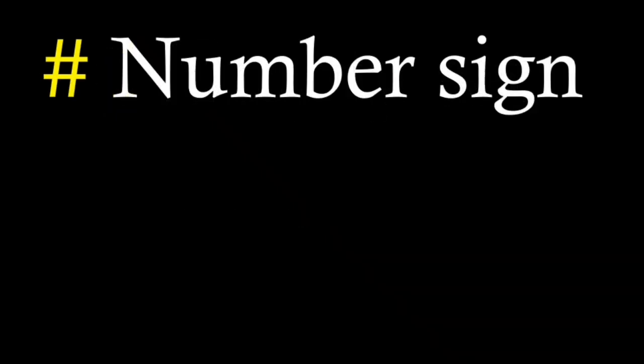Empty set symbol denotes a set that contains no elements. Number sign, also known as octothorpe or hashtag, usually denotes cardinality of a set, which is essentially the number of elements in the set. In symbol denotes membership in a set. Its opposite not in symbol denotes that an element is not a member of the set.